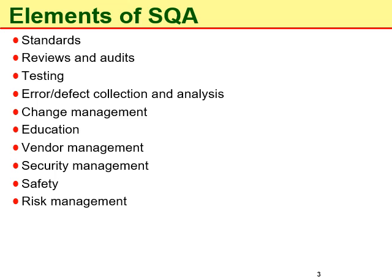The next element is testing. For example, there might be testing where we are concerned with testing the behavior of the system by giving some inputs to the system. Similarly, in another type of testing, we might be concerned with evaluating or testing the structure of the code to detect or identify issues in the code structure. The former type is called black box testing whereas the latter type is called white box testing.